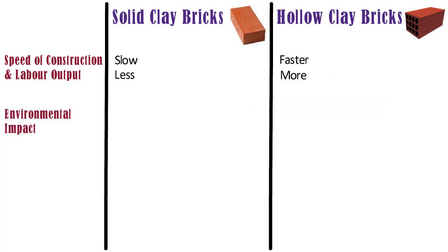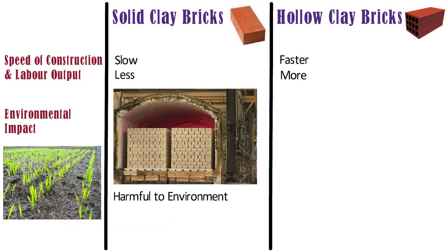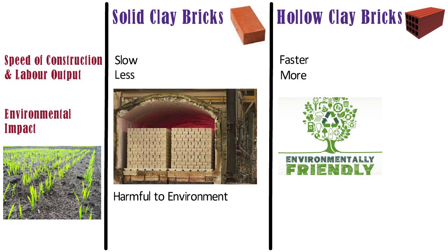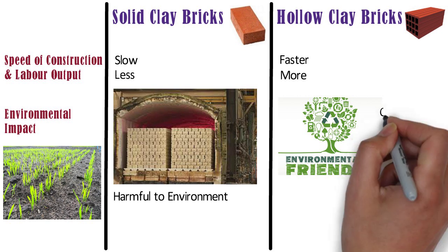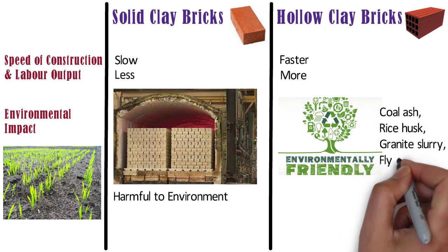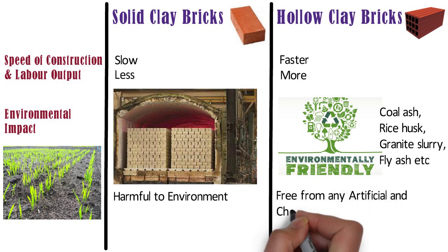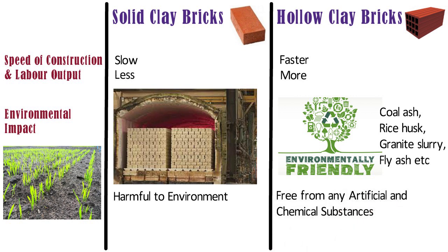Environmental impact. The process of making clay brick is very harmful to the environment, as it uses top fertile soil as a raw material. Whereas, hollow clay bricks are eco-friendly, since they are manufactured by using waste material or natural substitutes like coal ash, rice husk, granite slurry, fly ash, etc. They are free from any artificial and chemical substances that might release harmful gases in the environment.